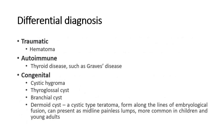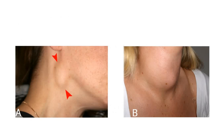Neck lumps can also be due to traumatic causes causing hematoma, autoimmune disease like Graves' disease, and congenital causes like cystic hygroma, thyroglossal cyst, branchial, and dermoid cyst. Picture A shows a lateral neck lump caused by cervical lymphadenopathy. Picture B shows a central neck lump caused by thyroid goiter.